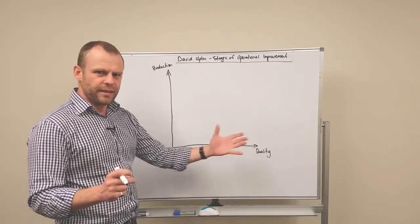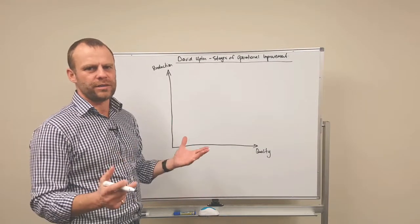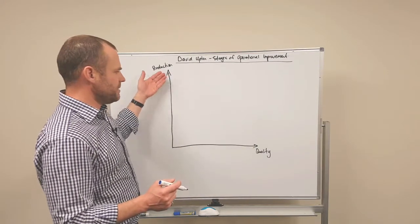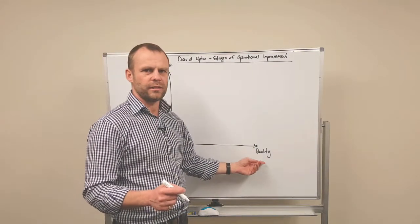There are two main things that you want to improve in any kind of operational environment. The first one is production and the second one is quality.